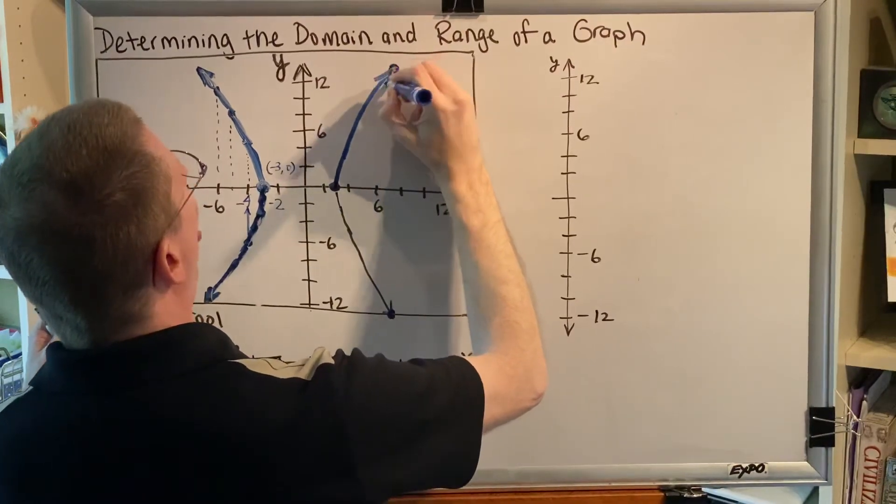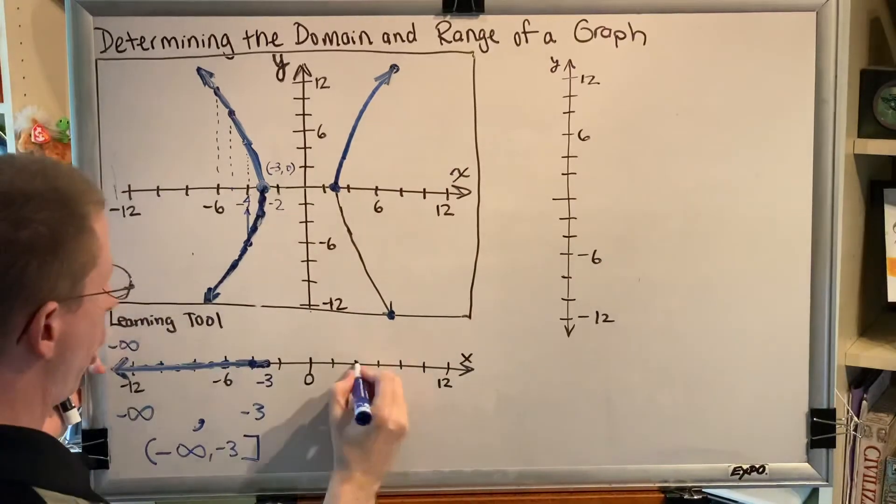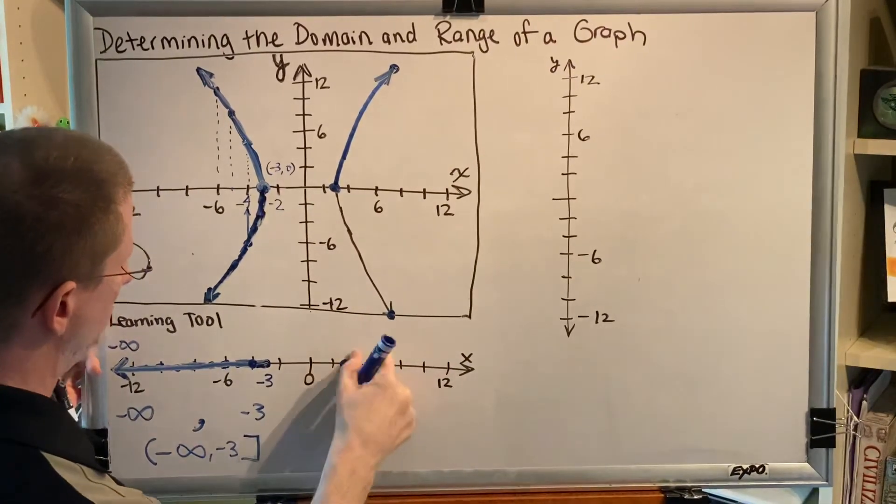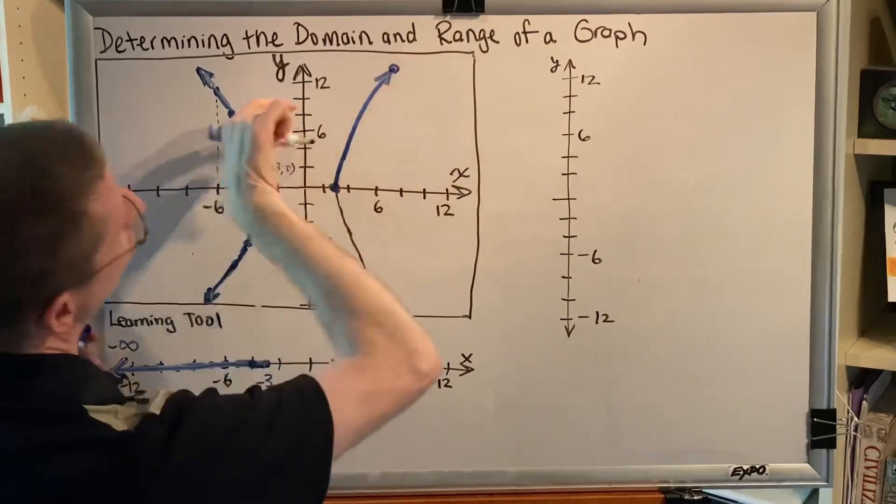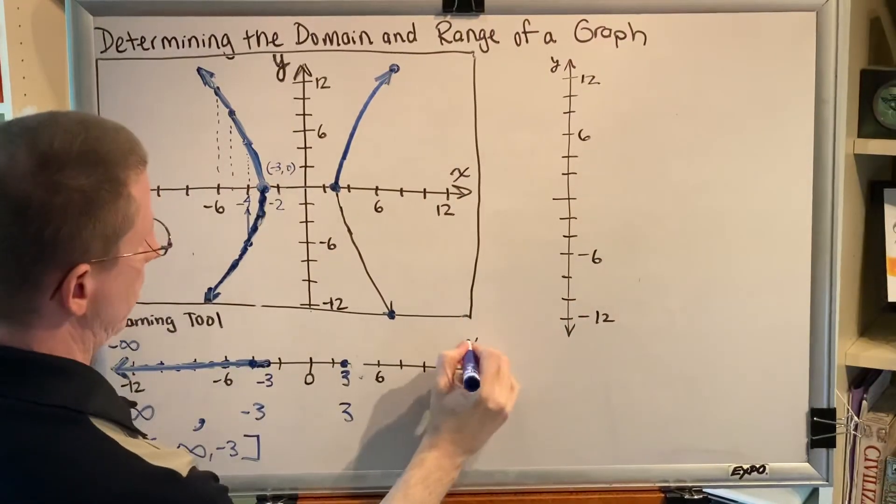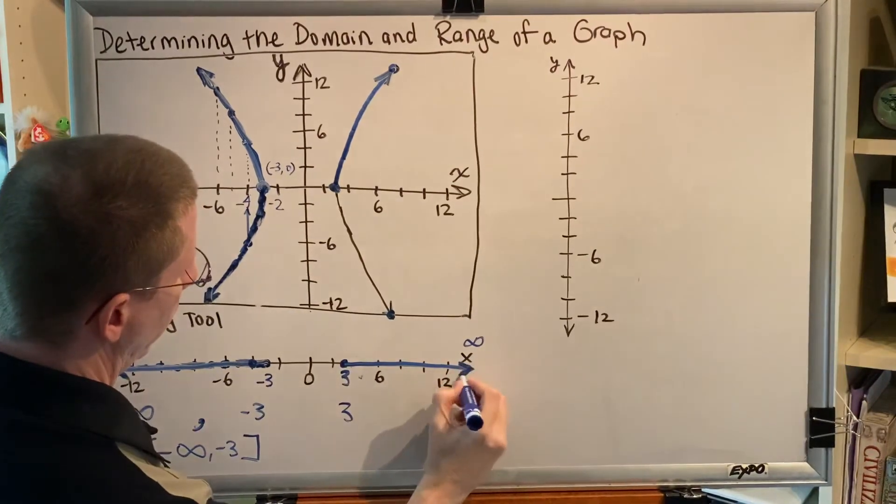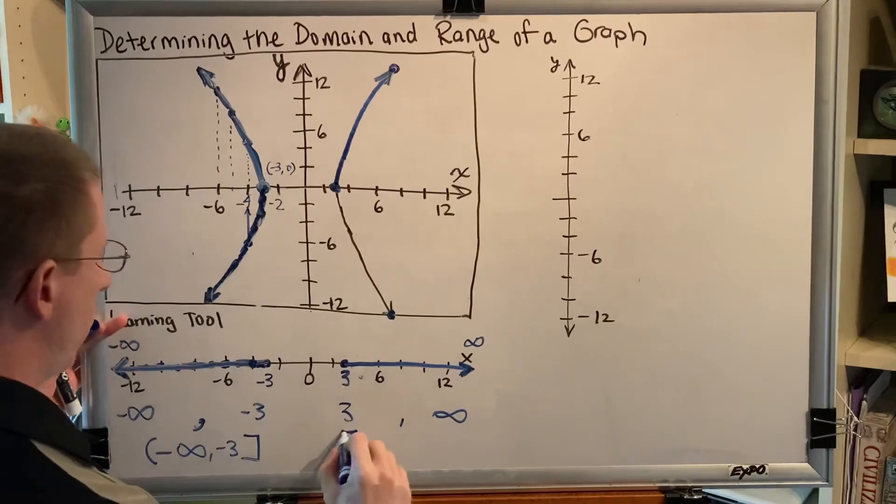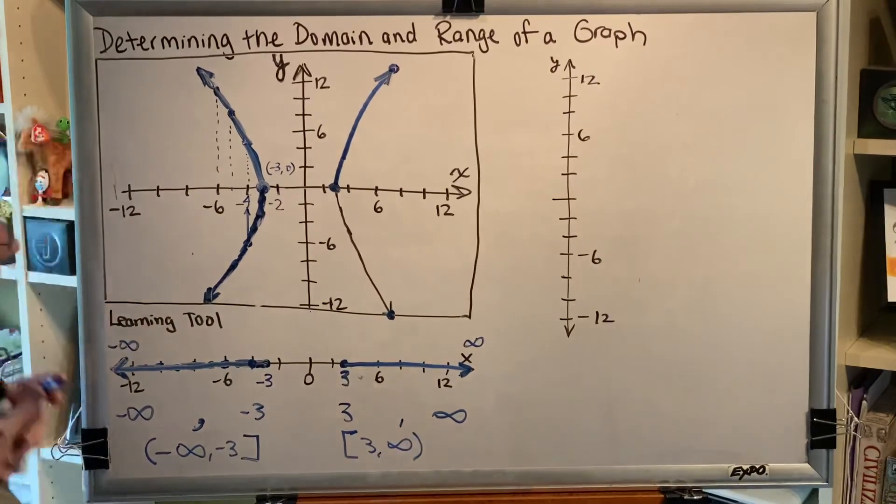Therefore, we have all of the x values from this one, which is 3, to this one, which is forever to the right, which is infinity. So we write our domain as bracket 3 comma infinity parenthesis.